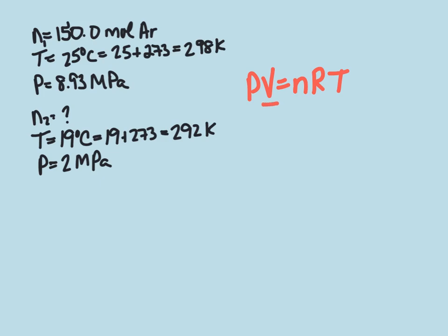The volume of the container remains the same and our gas constant remains the same. So what we can do is have P1 divided by n1T1 equals P2 divided by n2T2, since we have our volume and gas constant remaining equal.